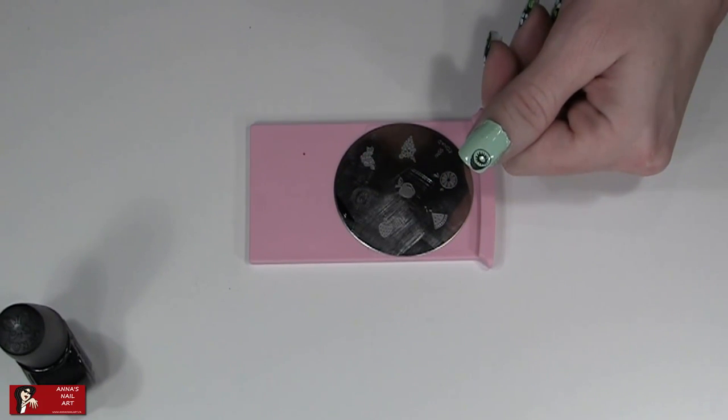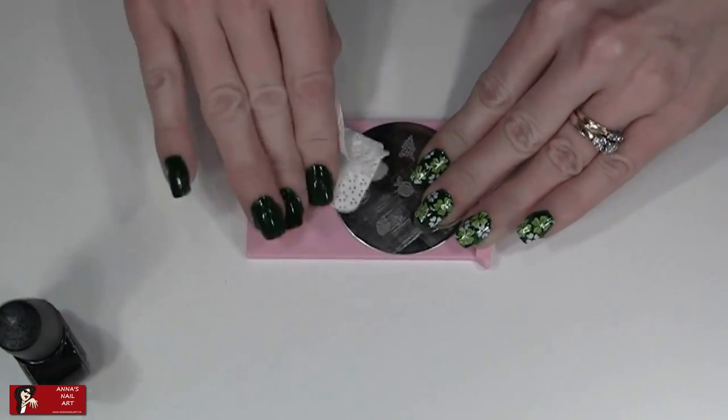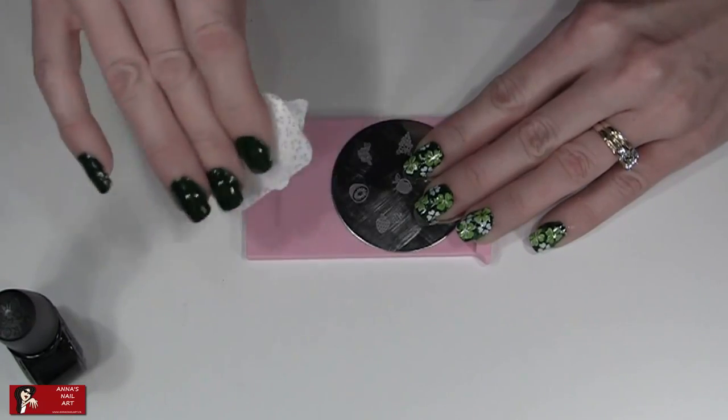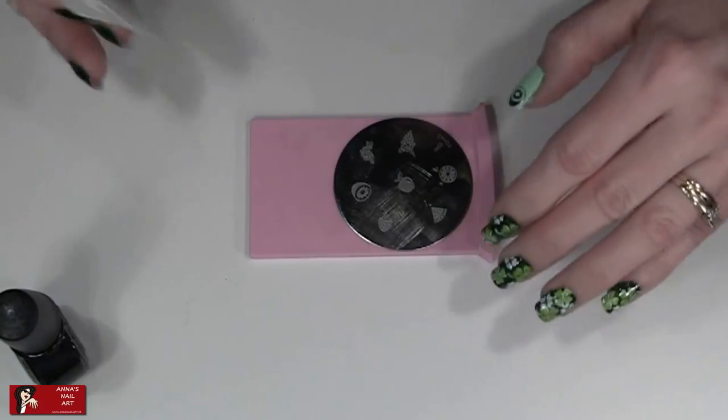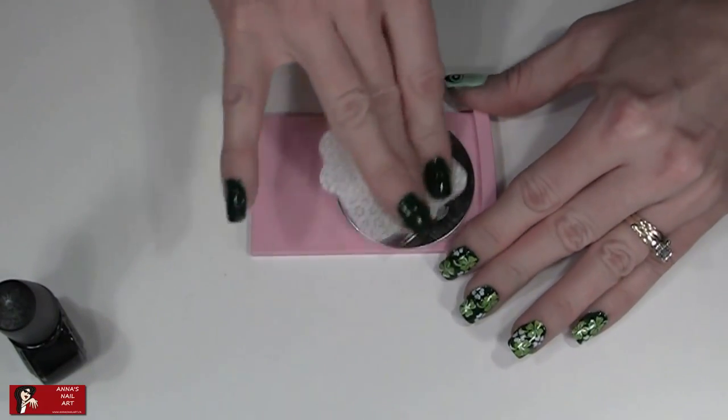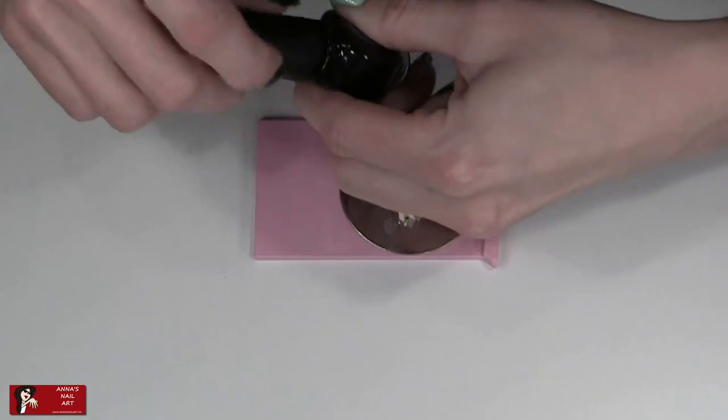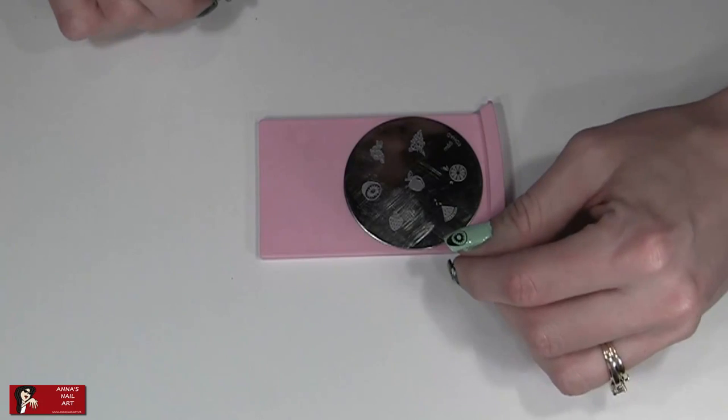Now I know this doesn't look like a pot yet, but it will. And this is a way to think outside the box. If you don't have a design on a plate for something specific you want to do, look for shapes and different things that you can use to change it into that. And that's what I love about how creative this method is for doing your nail art.